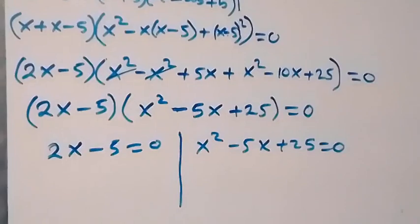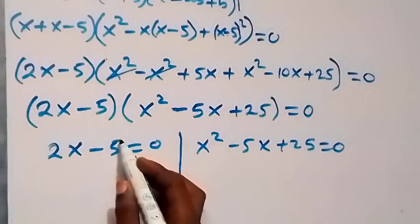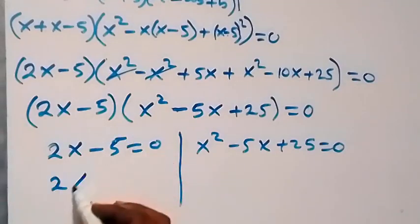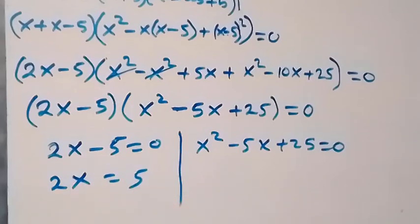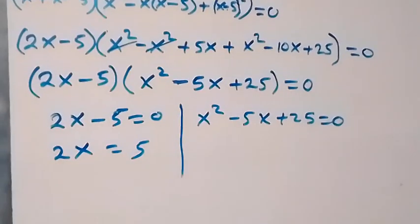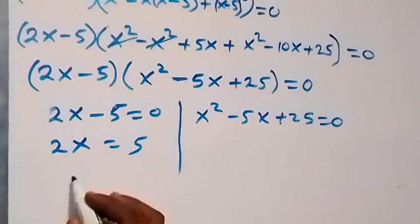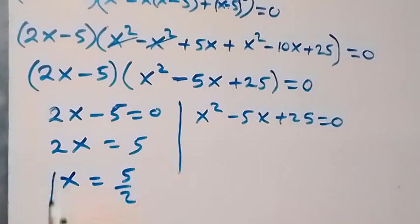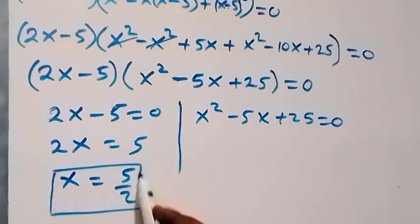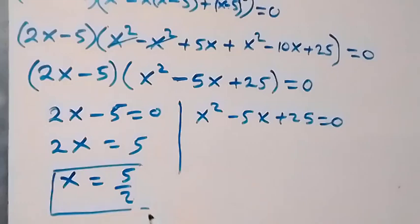Solving the first factor: 2x minus 5 equals 0 gives 2x equals 5, which implies x equals 5 over 2, when we divide both sides by 2. Next, we solve the other factor as well to get the remaining values of x.